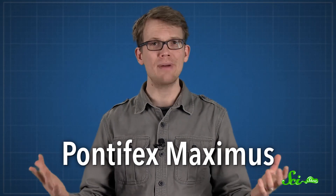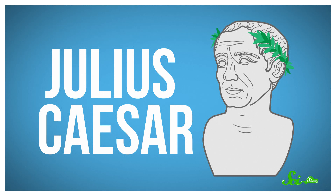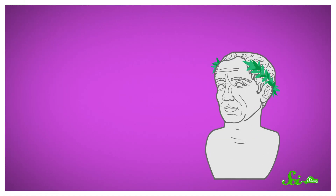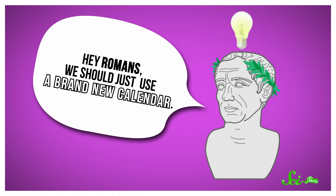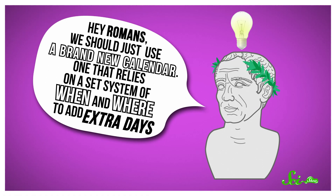Then there were the Romans, always trying to keep things interesting. Instead of having a system in place for how often there should be an extra month, they left it up to their highest religious authority, the Pontifex Maximus. Which kind of worked for a while, at least until Julius Caesar came along. The Romans thought adding those extra months was super bad luck, so they didn't want to do it while they were at war. And Julius was at war all the time, so the calendar got way off from where it should have been.